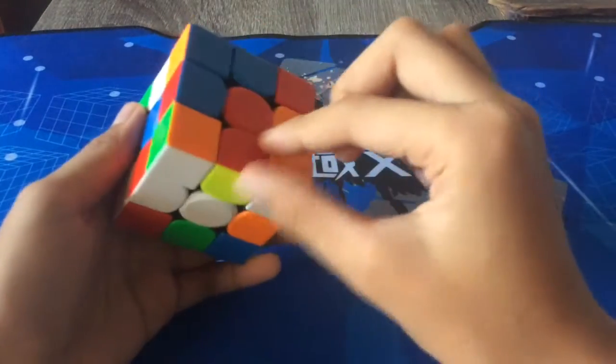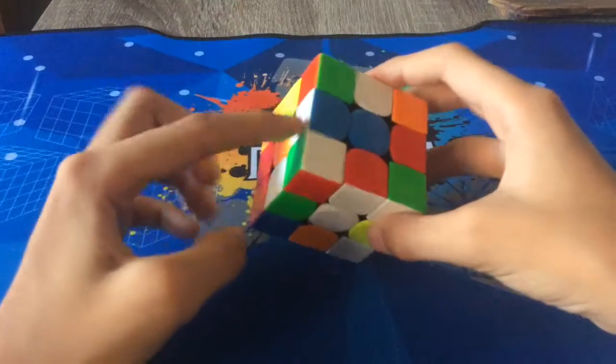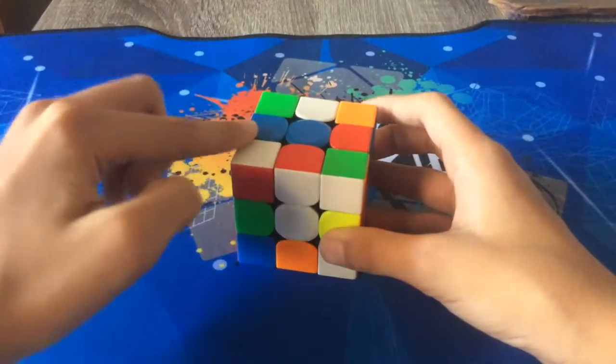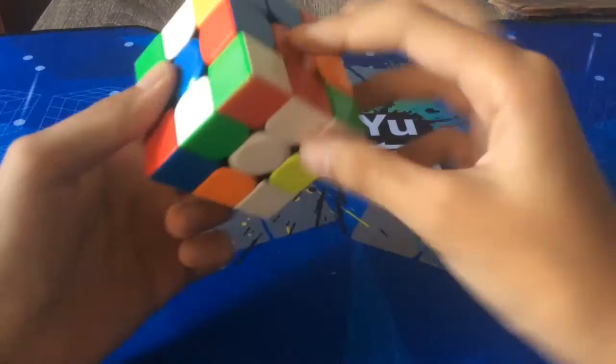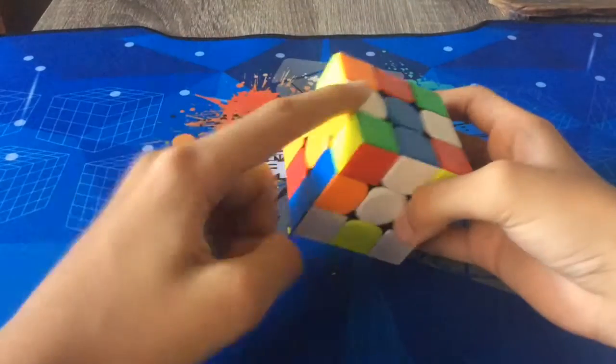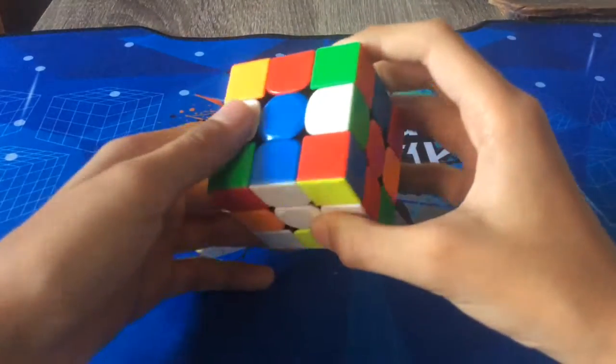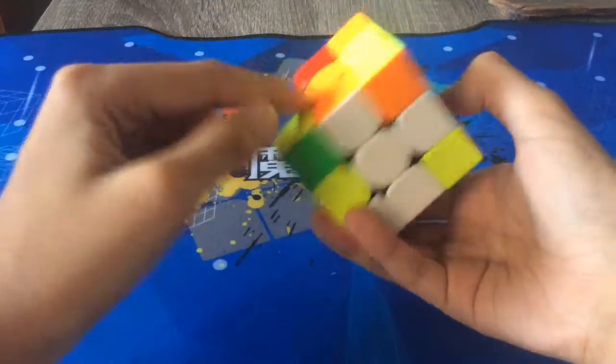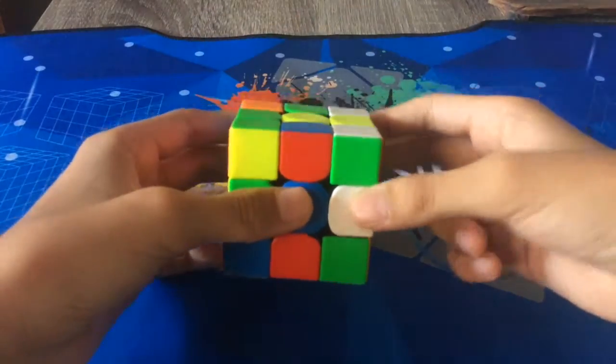We noticed this cross piece could go right there easily and this could go down to insert there. So we did a D to place that in place, F' to put that there and position the orange, and L to put the orange in. Then D', R', D to put the green in place.